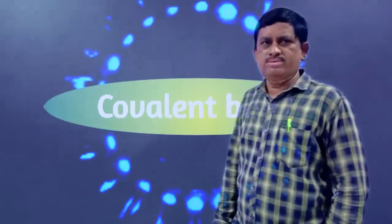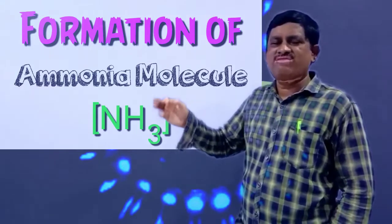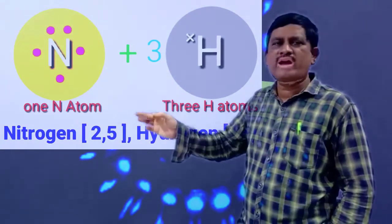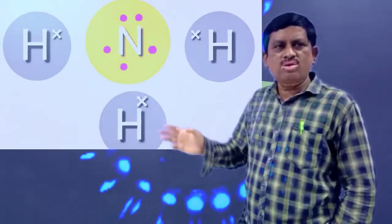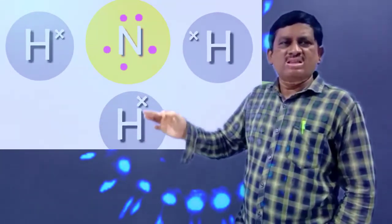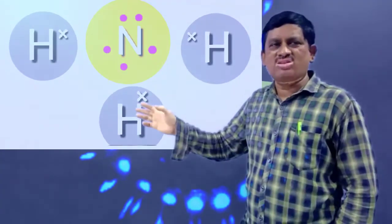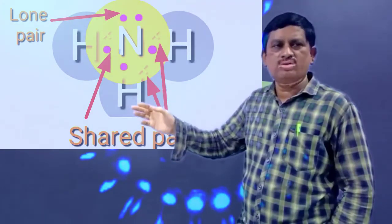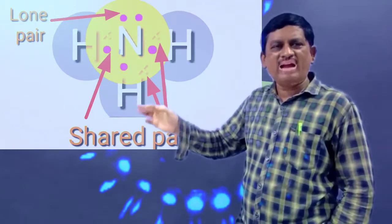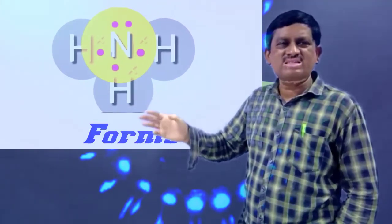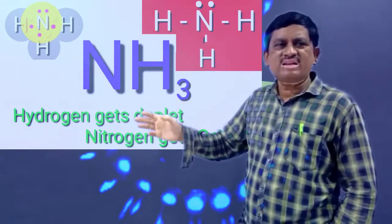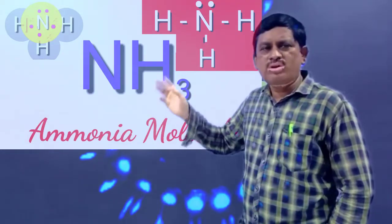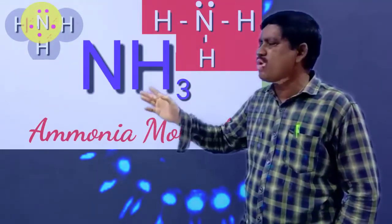Ammonia molecule: in ammonia, the central atom nitrogen has five valence electrons, so it needs three more electrons to acquire octet configuration. Nitrogen shares three of its valence electrons with one electron each from three hydrogen atoms to form the ammonia molecule. Finally, nitrogen acquires octet configuration — that is, neon configuration — and hydrogen gets helium configuration. Hence, three covalent bonds are present in ammonia. It has three bond pairs and one lone pair.